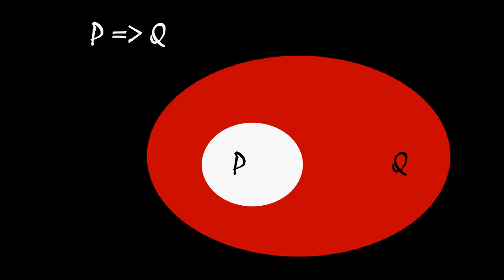Affirming the consequent then says that q is true. What do we know about p given that q is true? Not much. Both of these dots are inside of q — one is inside of p, one is not. Just because we know that q is true doesn't allow us to say anything about whether p is true.